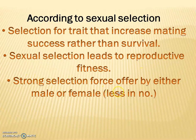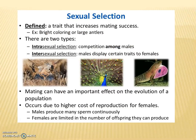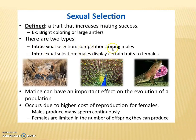It is a strong selection force offered by either male or female which are less in number. Sexual selection may be categorized into two groups: intrasexual and intersexual. A trait that increases mating success — for example, bright coloring or large antlers. In intrasexual selection, there is competition among males; it is more common among males, with competition followed by selection.